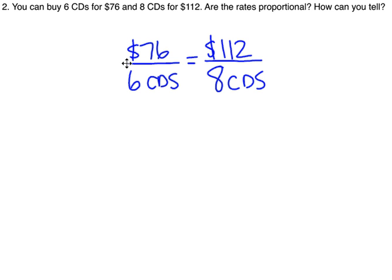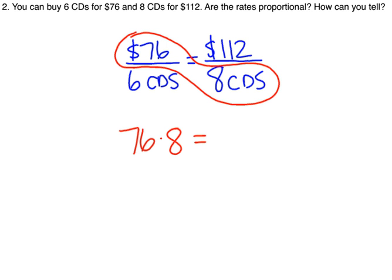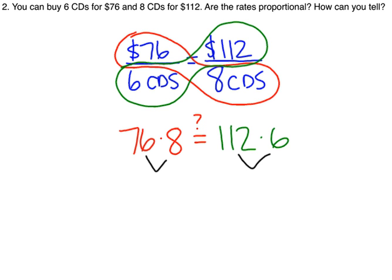We have several options to determine if these are proportional. Probably the most straightforward one that will always work is to use cross products. So 76 times eight, and we're going to test to see if that equals the other cross product of six times 112. When you use cross products, you're always going to use those to help you set up an equation. 76 multiplied by eight is 608. 112 multiplied by six is 672. And those are not equal. So I can answer with no, these rates are not proportional. And I can tell because their cross products are not equal.